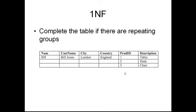The first normal form says that we need to complete a table if there are repeating groups. As you can see here, we have repeating groups in a product ID field which is 1, 2, and 3. So if you see any spaces here and you see one field with three different values, it means that we have repeating groups.